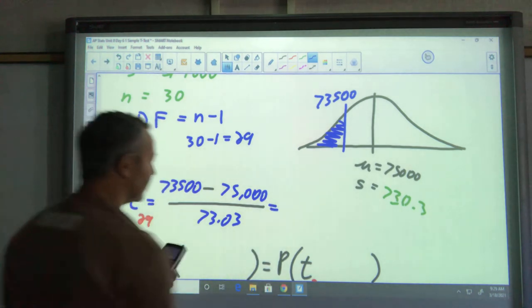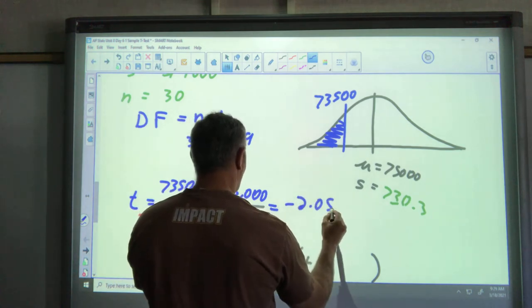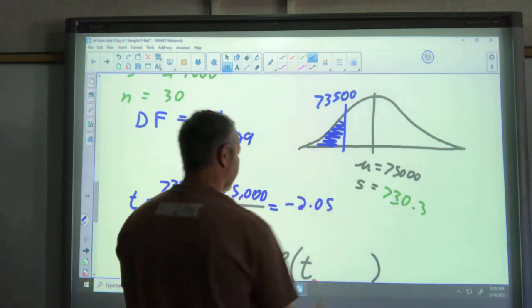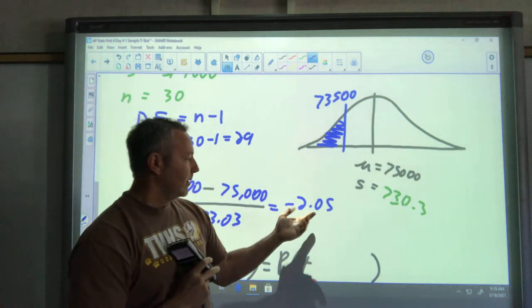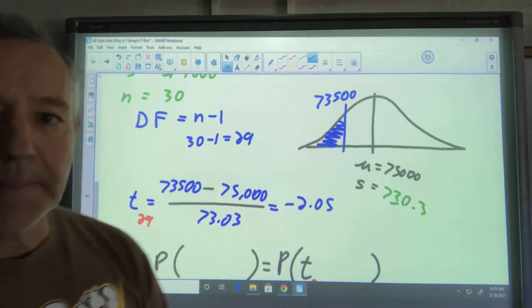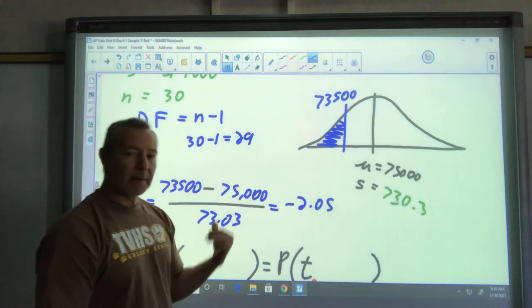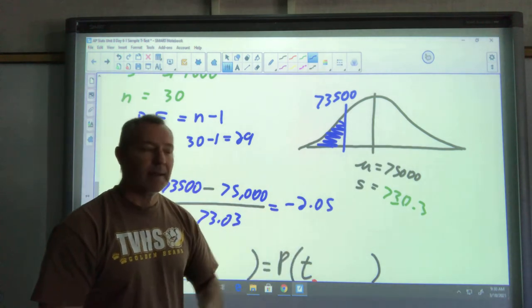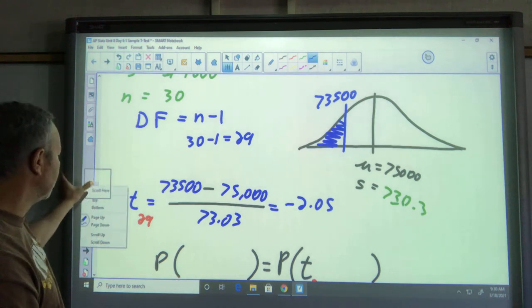Now you might be thinking, hey that's more than two standard deviations away so it would be a rare occurrence. But remember we're working on the t distribution, so don't be so sure. It depends on the degree of freedom if that's rare or not. It's not a simple case like the z score where that would be a rare event because it's outside of two standard deviations.